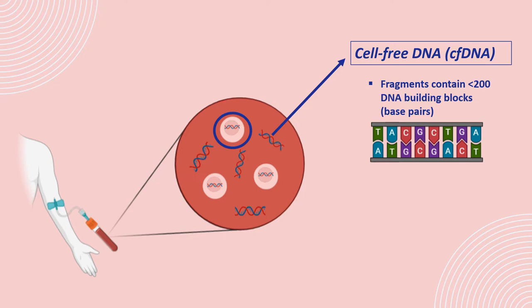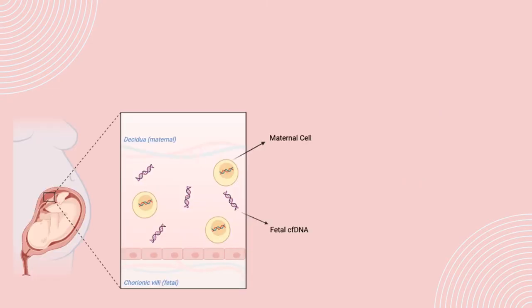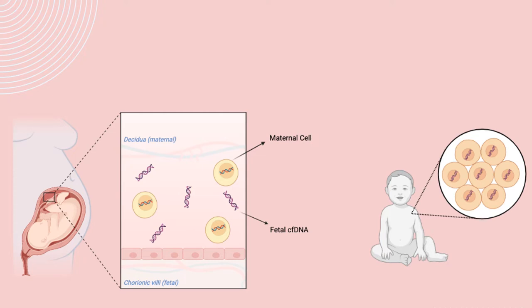In comparison to common invasive methods such as amniocentesis and chorionic villus sampling, this method does not pose a risk to you or your baby. During pregnancy, the mother's bloodstream contains a mix of cfDNA that comes from her cells and cells from the placenta — the tissue in the uterus that links the fetus and the mother's blood supply. These cells are shed into the mother's bloodstream throughout pregnancy, and the DNA in placental cells is usually identical to the DNA of the fetus. Analyzing cfDNA from the placenta provides an opportunity for early detection of certain genetic abnormalities without harming the fetus.